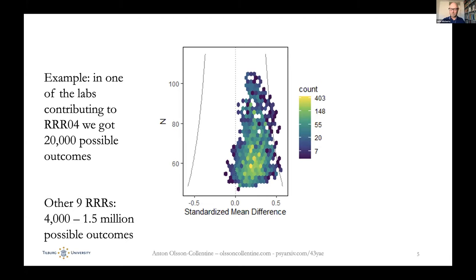You see that some go up and down, reflecting discarding of cases. Others move horizontally, which might be related to cases where the outcome measure changed. Over the nine different projects — these are different topics of interest — we found between 4,000 and 1.5 million multiverses for different studies. That's quite a lot of options, a lot of ways to find significant results.